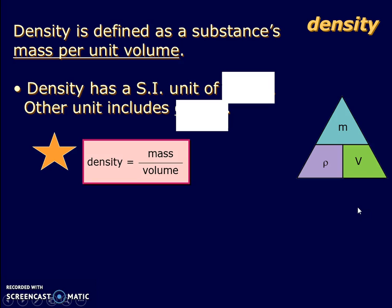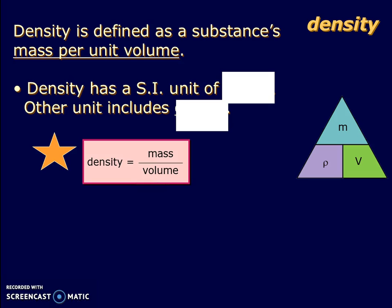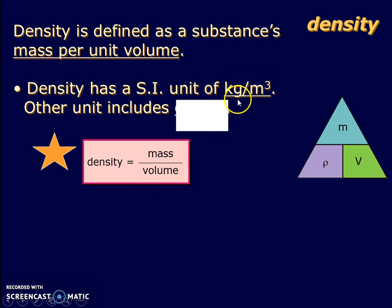So how can we understand density? Density is defined as mass per unit volume, so mathematically it is mass divided by volume. The SI unit of density follows the SI unit of mass divided by the SI unit of volume, so it will be kg per meter cubed.